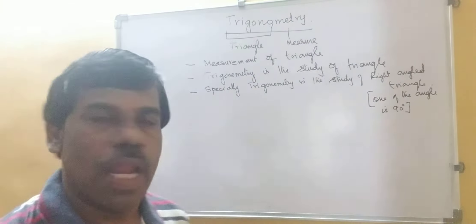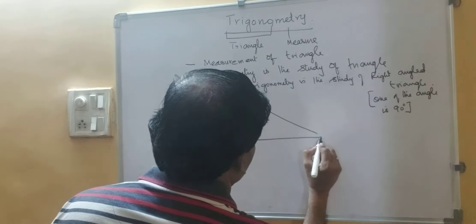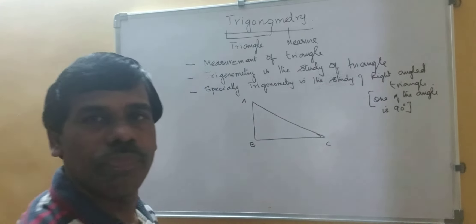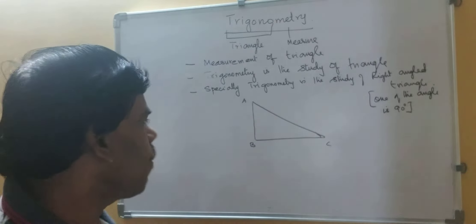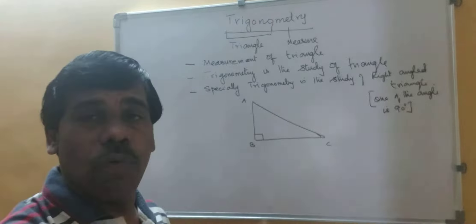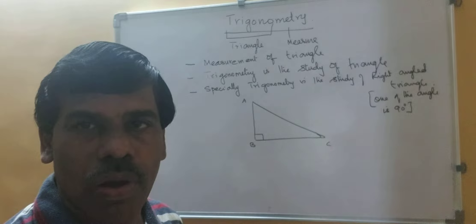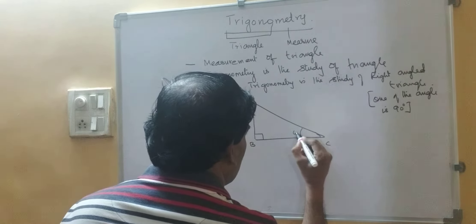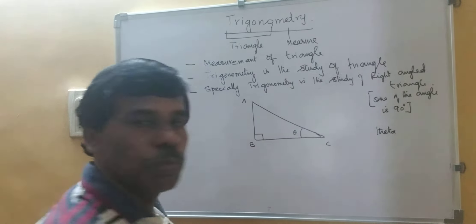Now we will draw one right triangle — A, B, C. As I told you, one of the angles is 90 degrees. We will put a box symbol here to indicate it is a 90-degree angle, meaning it is a right triangle. And this angle here is called theta.